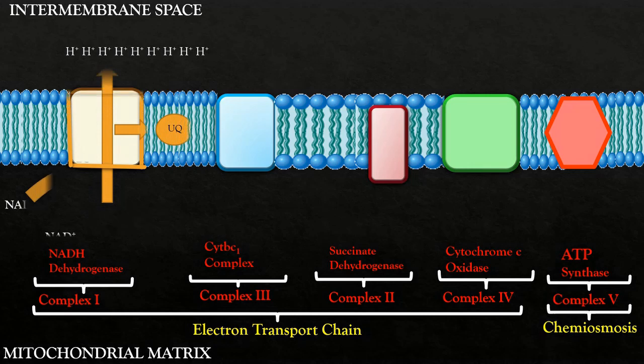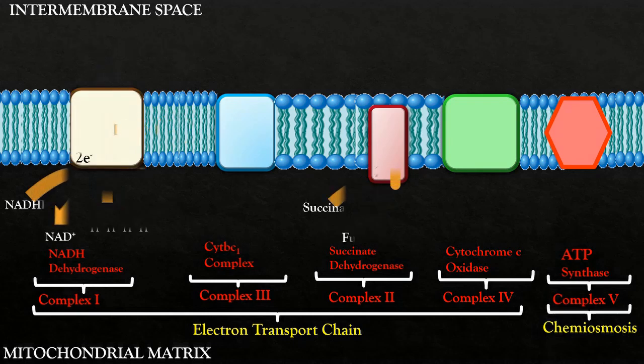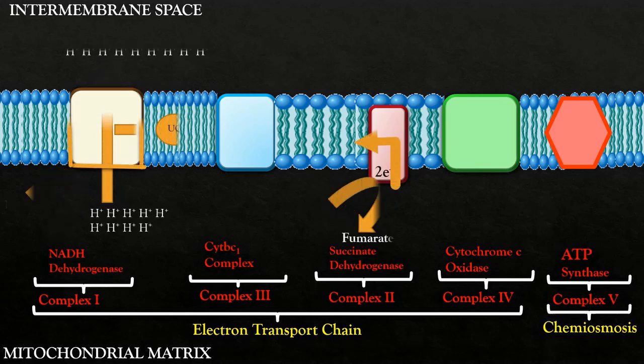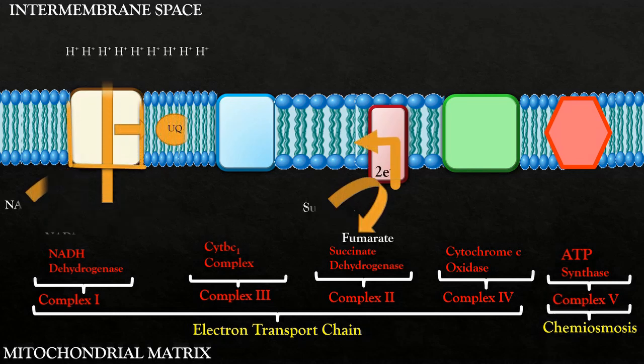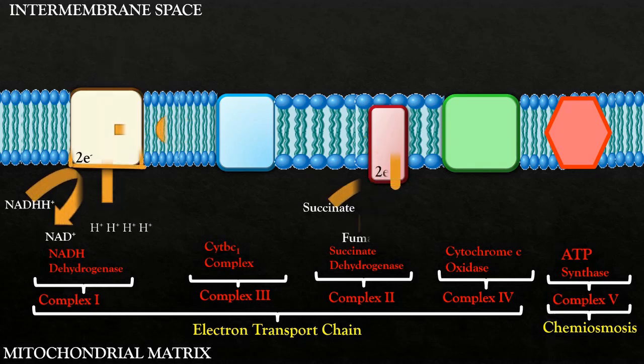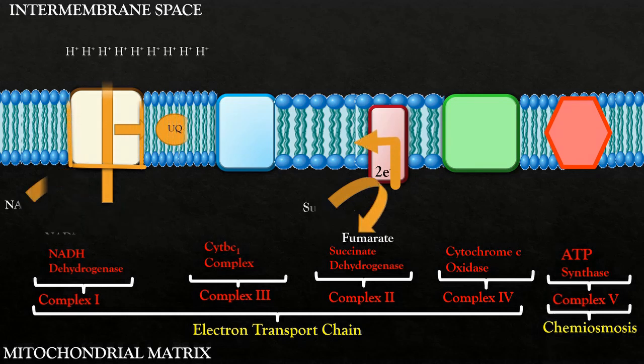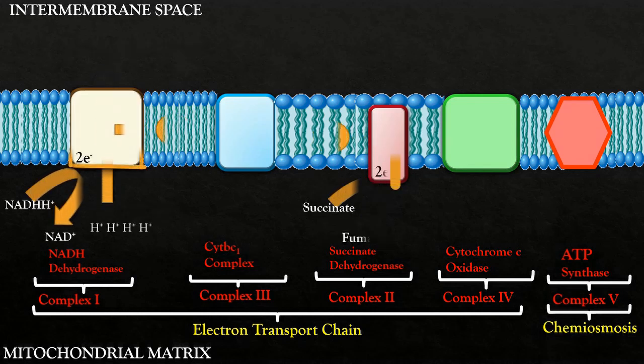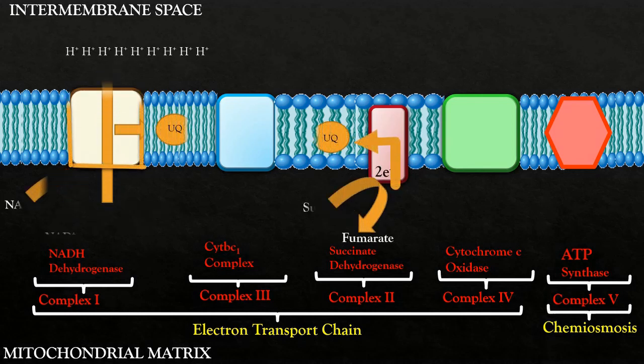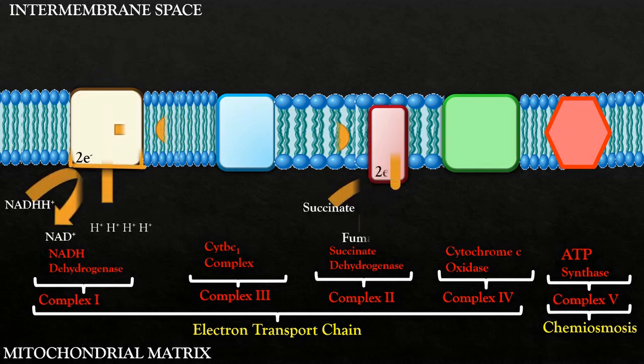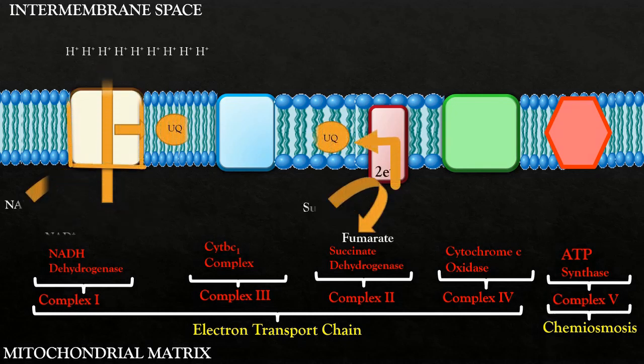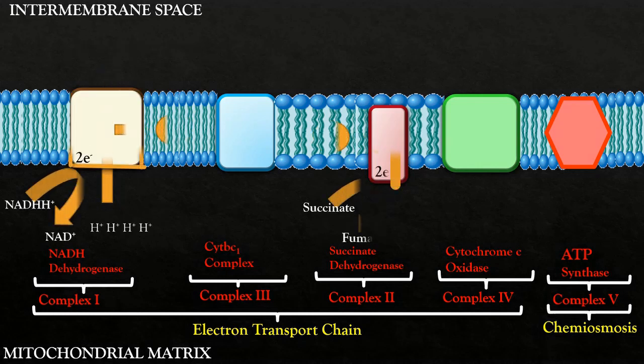While this process is going on in complex 1, FADH that was produced during the Krebs cycle donates its electron to complex 2. Complex 2 however is not supercharged and does not pump out protons to intermembrane space. It rather transfers its electron to coenzyme Q. It is very important to know that NADH works only on complex 1 whereas FADH can bind specifically to complex 2. Complex 1 and complex 2 transfer their electrons to coenzyme Q which is a common electron acceptor.